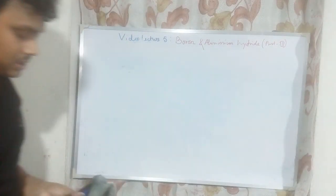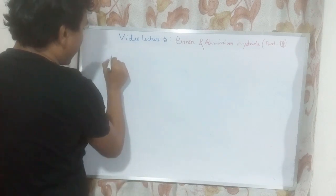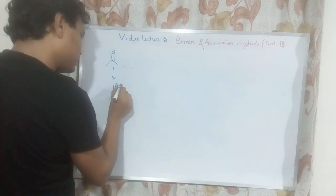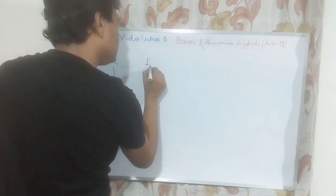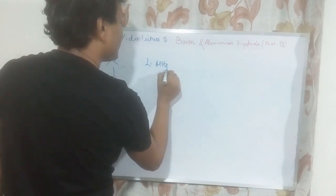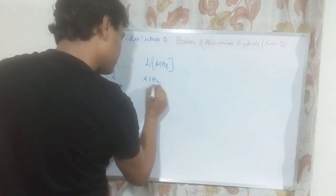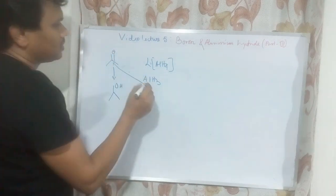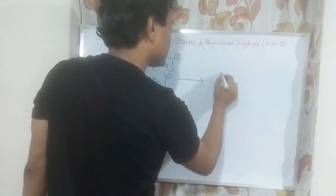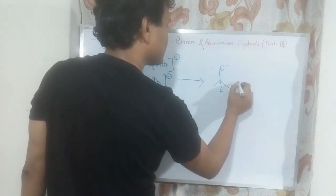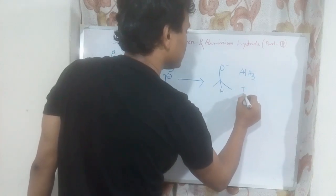Now let us discuss the fate of the reagent — we are always curious about the organic moiety, such as how carbonyl is converted into alcohol. But what happens to the reagent? Starting with lithium aluminium hydride, after transferring one hydride, the product is an alkoxide O⁻ and AlH3, plus lithium.